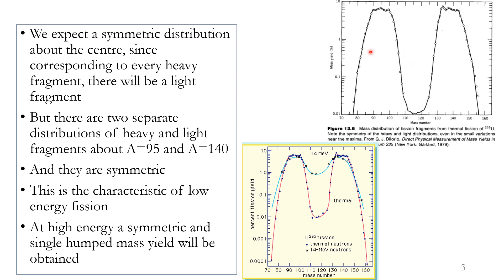This is the experimental result. Even though we expect a symmetric distribution about the center — since corresponding to every heavy fragment we expect a light fragment — you can see there are two separate distributions of heavy and light fragments. The x-axis is the mass number and y-axis is the mass yield. There is a symmetric distribution of light fragments centered about mass number A = 95, and a heavy fragment distribution centered about A = 140. So there are two symmetric bumps instead of one.